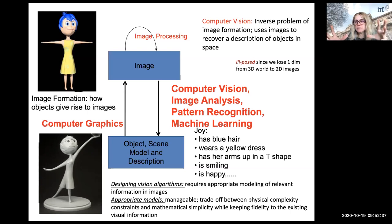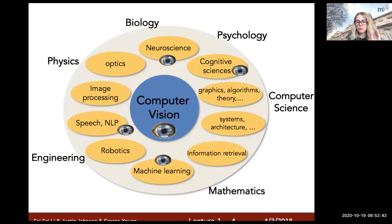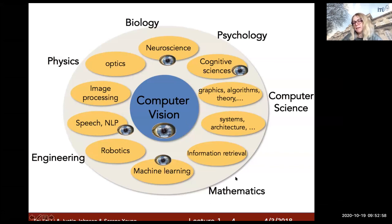Computer vision is at the center of many disciplines — it's a very interdisciplinary field. From the engineering, mathematics, and computer science side, we design image processing techniques, machine learning techniques, and computer vision algorithms, so it ties to all three of those areas.